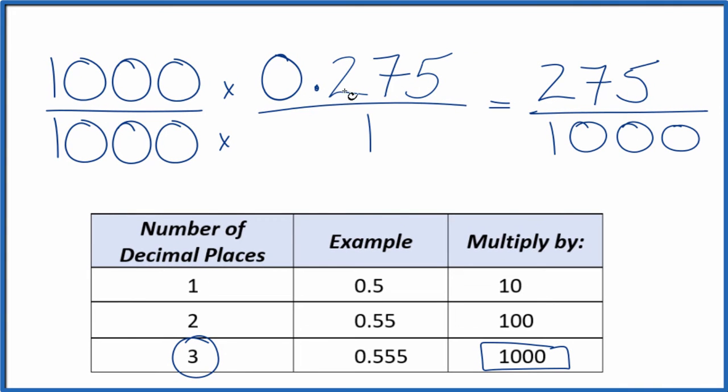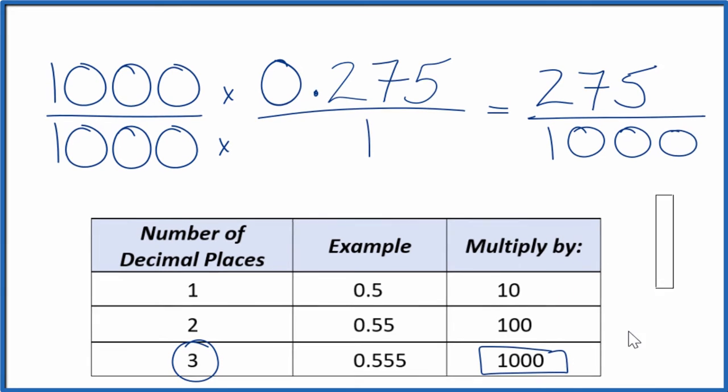The decimal 0.275 equals the fraction 275 over 1,000. But we can reduce this or simplify it further. So let's give ourselves some room.